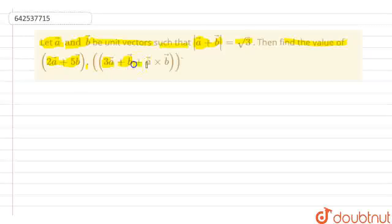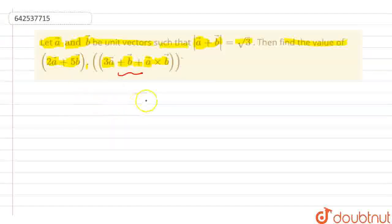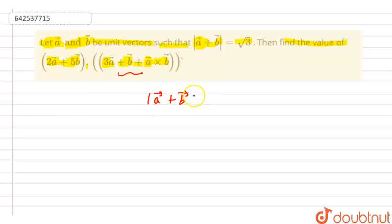A vector plus V vector plus A vector cross V vector. So basically in this question, you find the value of this expression. As you know, the value of modulus of A vector plus V vector is equal to root 3.